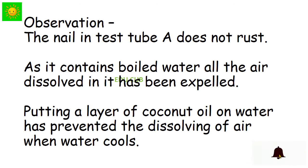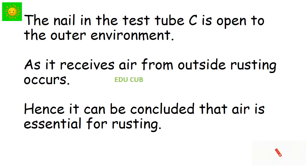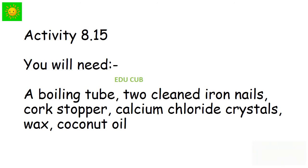Because there is air dissolved in water, the nail in it rusts. The nail in test tube C is open to the environment, so it receives air from outside. Rusting occurs. It can be concluded that air is essential for rusting.